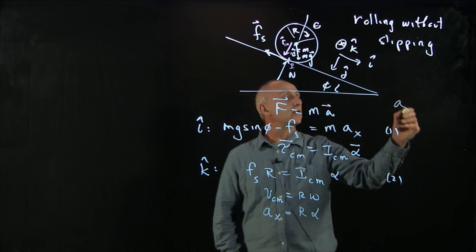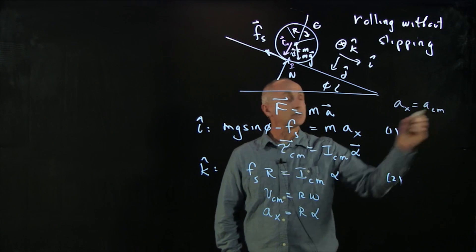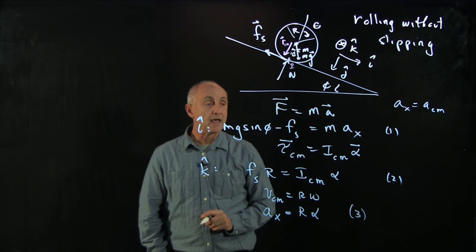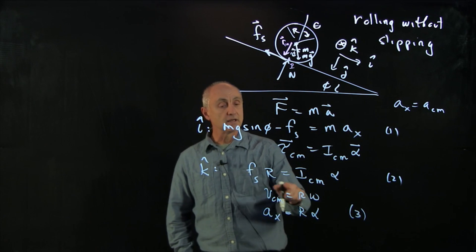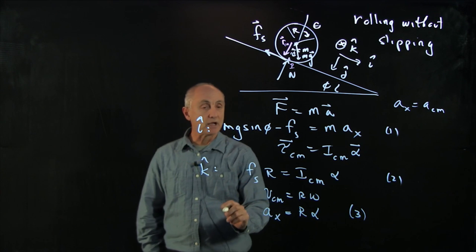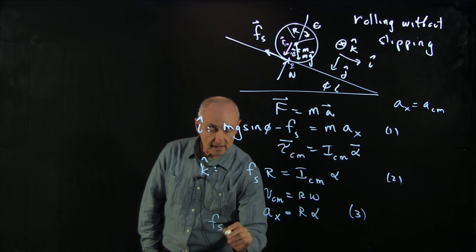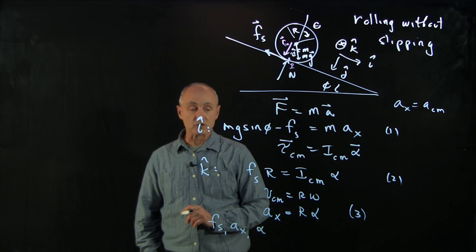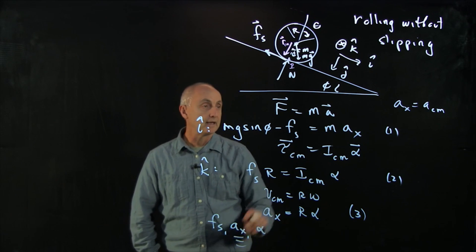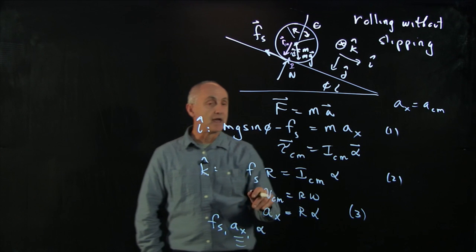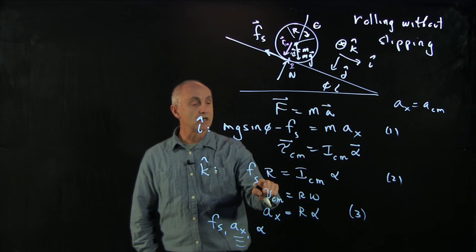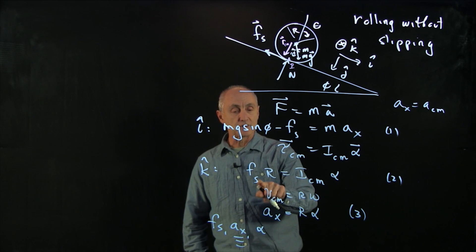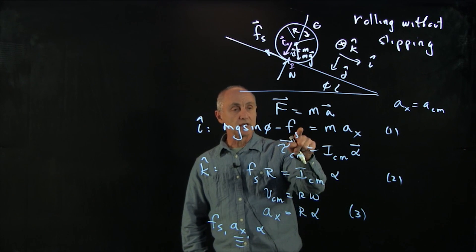So this ax here is the acceleration of the center of mass. And that's our third condition. And so now I see that I have three equations in my unknowns, fs, ax, and alpha. And so I'm going to solve these equations for a. And I'll look at these equations. And what I'll do is I'll just substitute for alpha ax over r, and then solve this equation for fs and put it in there.